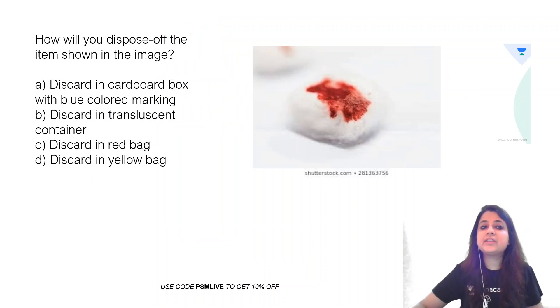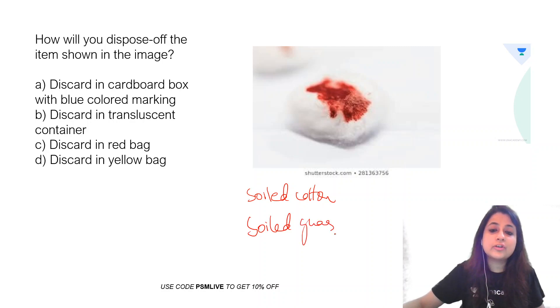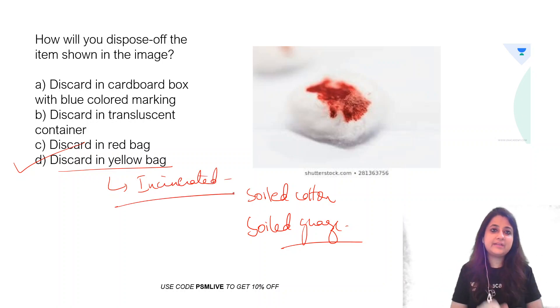One more image for the day, why do you think this is going to be discarded? So, this is a soiled cotton piece or you can also say a soiled gauze, anything which is soiled. Soiled gauze piece, soiled dressings, linens, beddings, all of them are disposed of into yellow colour bag and ultimately they are incinerated. So, these were three images for the day. Thank you so much for watching. I'll be coming soon with another video.